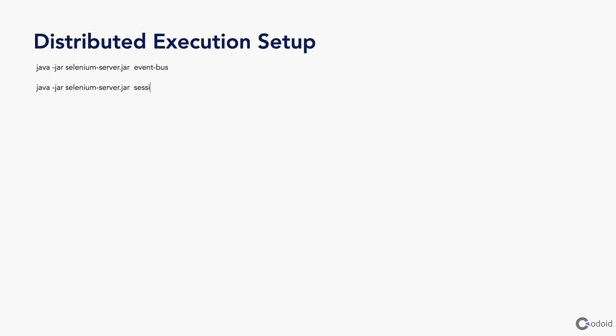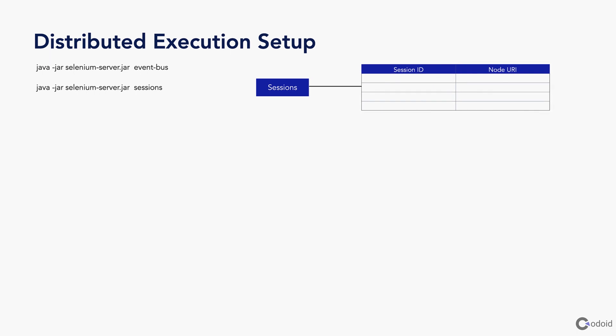Once the event bus is started, you have to start sessions. Sessions has a session map which contains the session ID and node URI. Once sessions is started, you have to start the session queueer. Whenever the client Selenium code sends any session creation request, that request is queued in the session queueer.